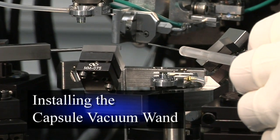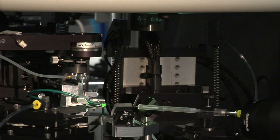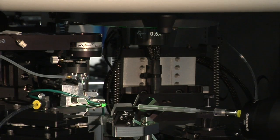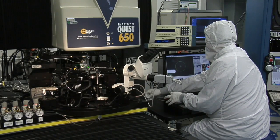This vacuum wand is used to center the capsule in the target. Here we see the vision system of the optical coordinate measuring machine focusing on a mirror that provides a side view of the target.